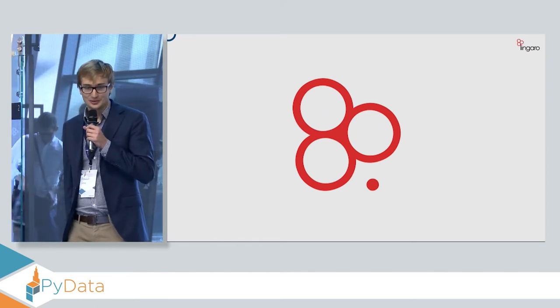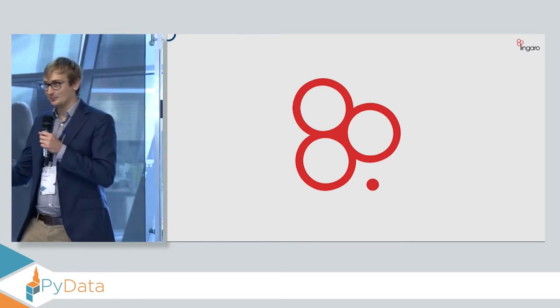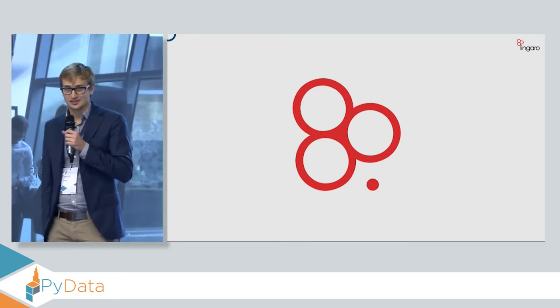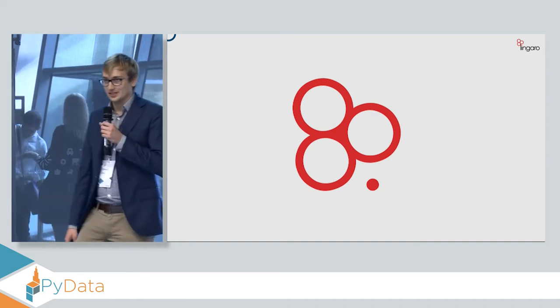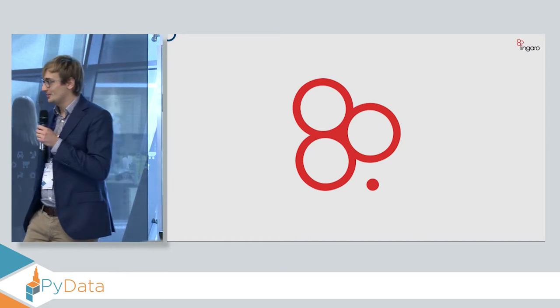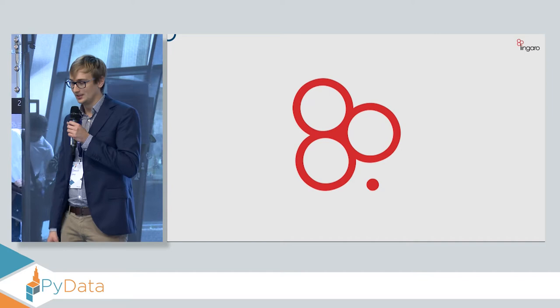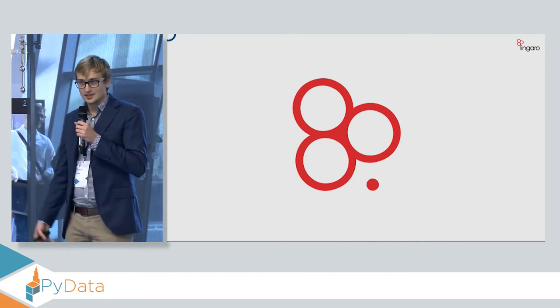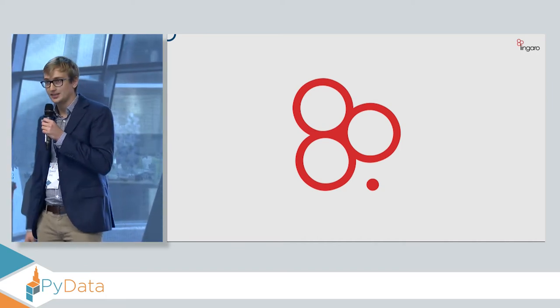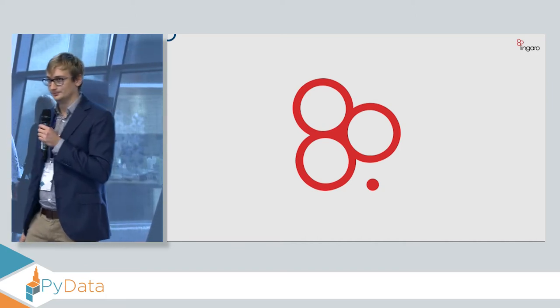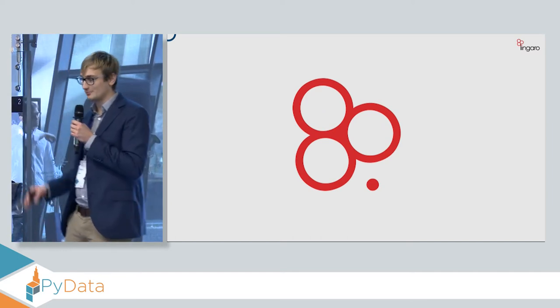I'm trying to juggle both professional career working at Lingaro, the company that does a lot of services connected to the data science world from warehousing to reporting, user experience. I work at a department that focuses on data science and machine learning. And from the academic perspective, I pursue my PhD degree, where I focus on neural networks especially.